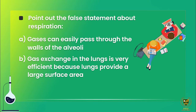Next MCQ: point out the false statement about respiration. Option A — gases can easily pass through alveoli walls — that is correct. Option B — gas exchange in the lungs is very efficient because lungs provide a large surface area — that is also correct. We need to find the false statement, so neither of these is our answer.